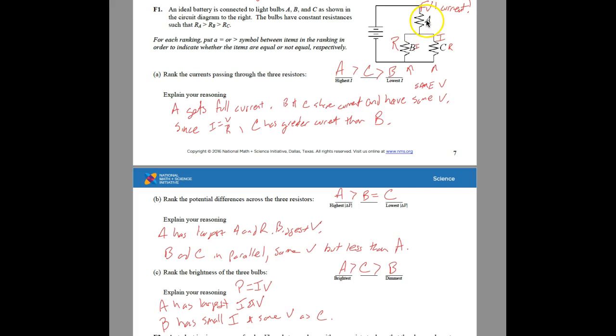These two both have the same voltage, but this resistance is smaller, so we get a bigger current. If you think about water flowing through pipes, smaller resistance means you can get more water through it.